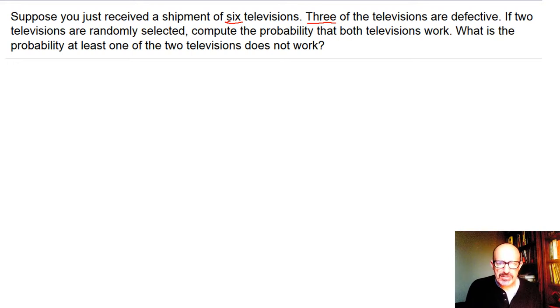So if two televisions are randomly selected, compute the probability that both televisions work. This is probability that the first television works and the second television works. Now we've got a probability of a compound event. Because it's an and, you know it's a multiplication rule of some kind.